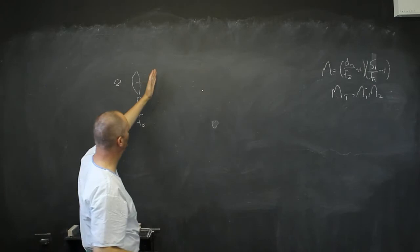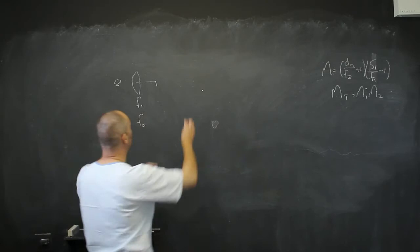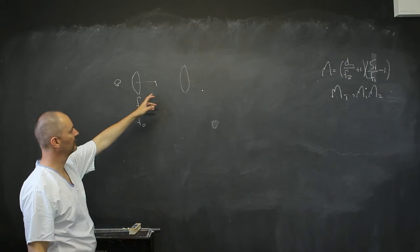And you're going to place your object around about in the focal distance. This is going to create for you a real image that is inverted.